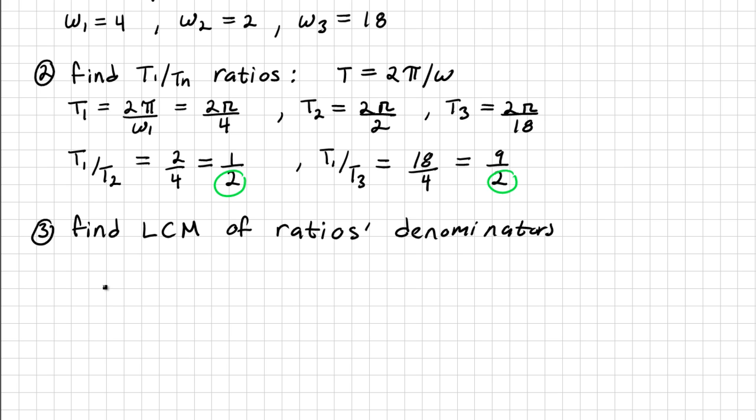So the times table of 2 is 2, 4, 6, 8, and so on. The other denominator is also 2. So we write its times table.